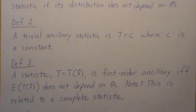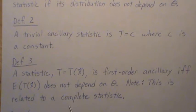Definition 3, a statistic T is a first order ancillary statistic if and only if the expected value of the statistic does not depend upon theta. And the note here is that this is related to what's called a complete statistic, which we will start talking about in a couple of videos.